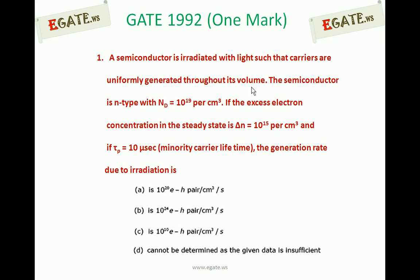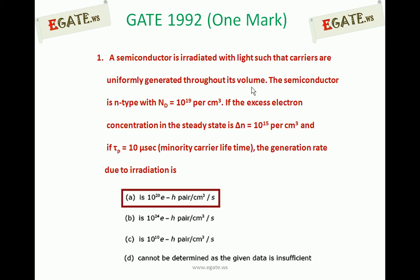The correct answer for this question is A: 10 power 20 electron hole pairs per centimeter cube per second.